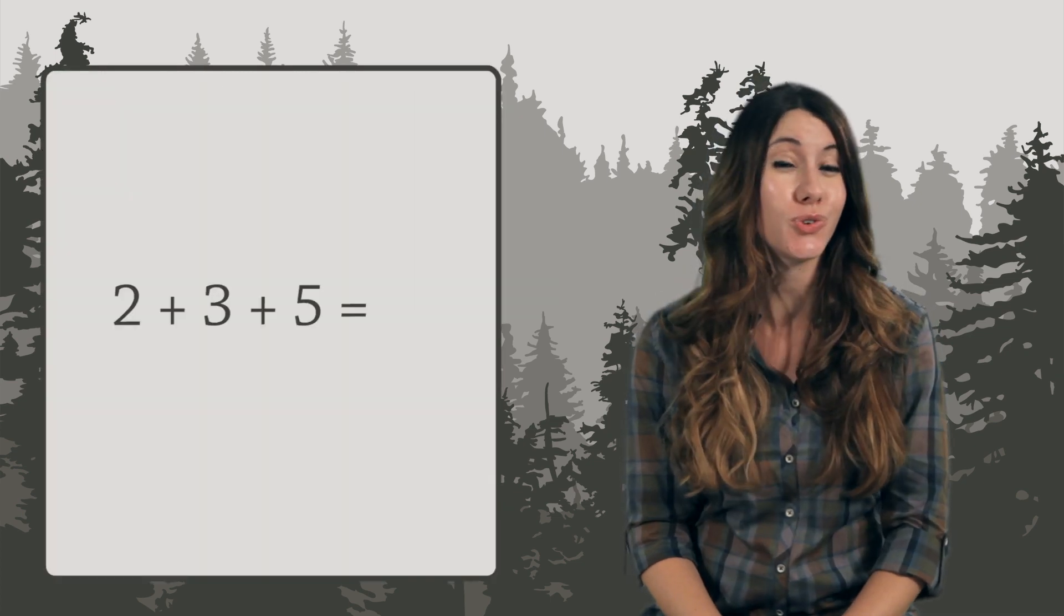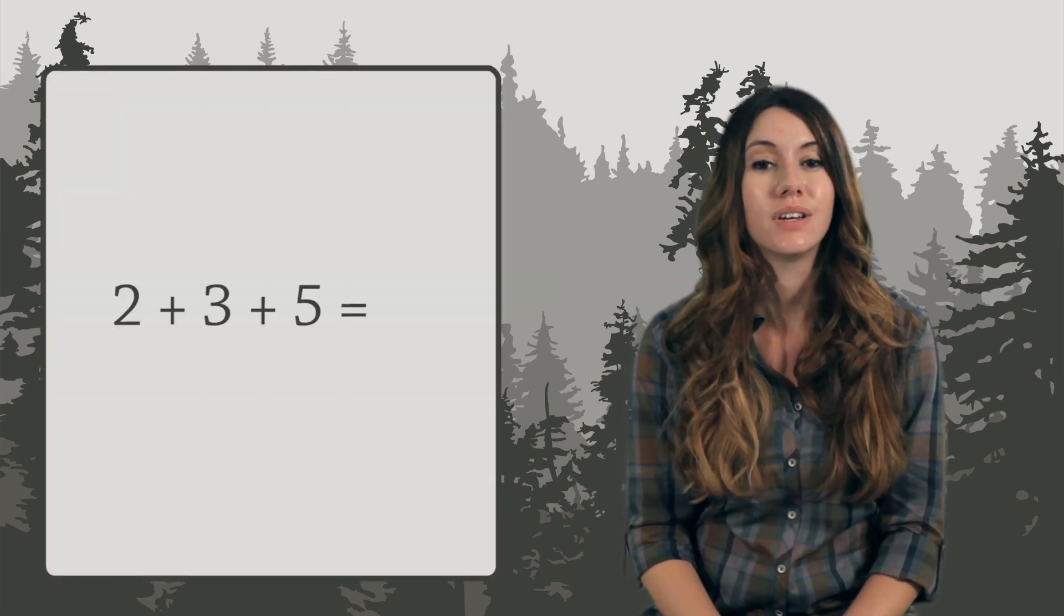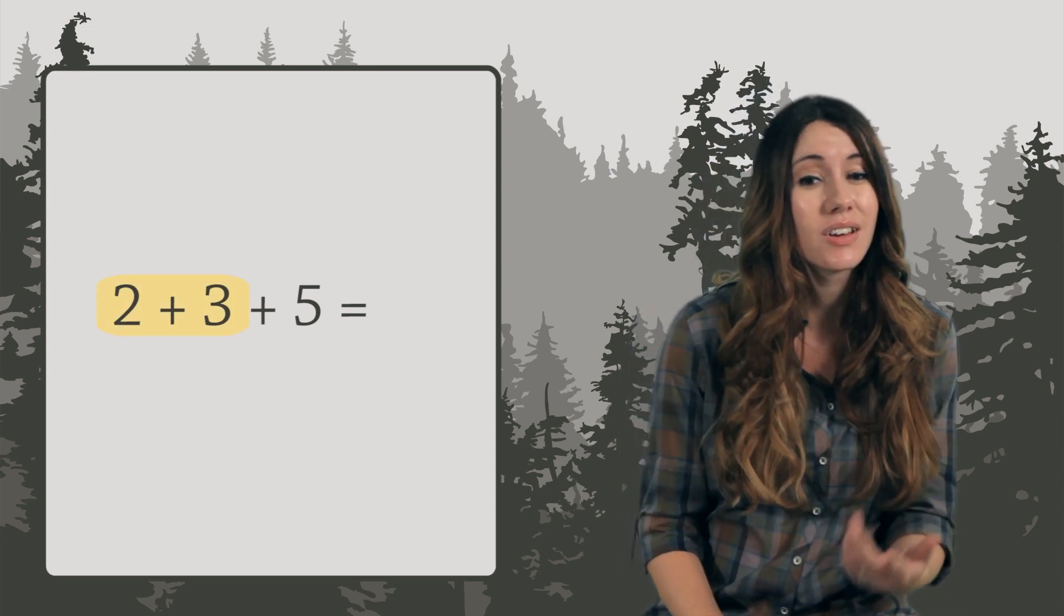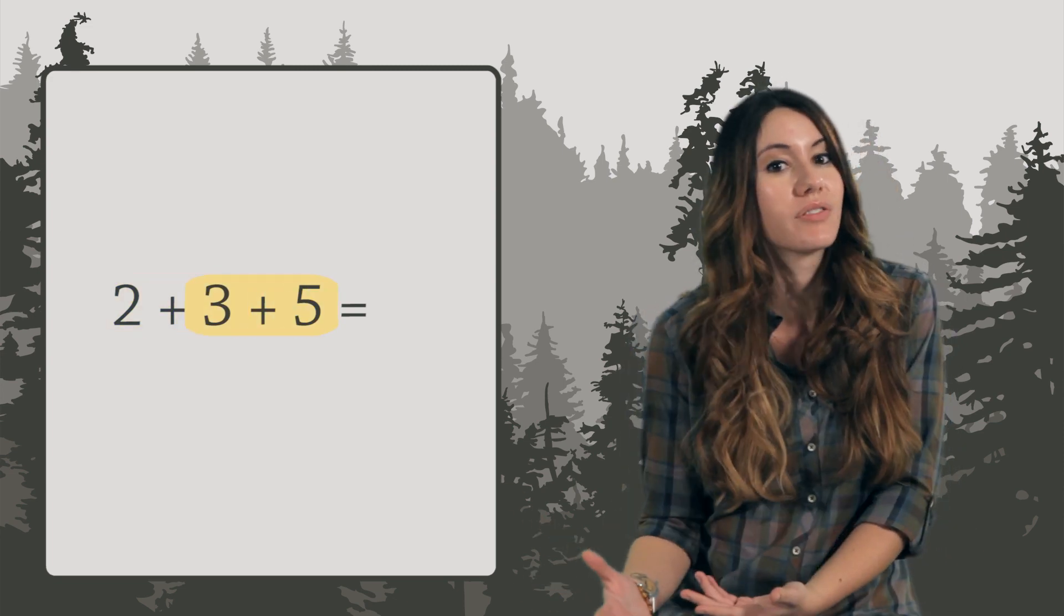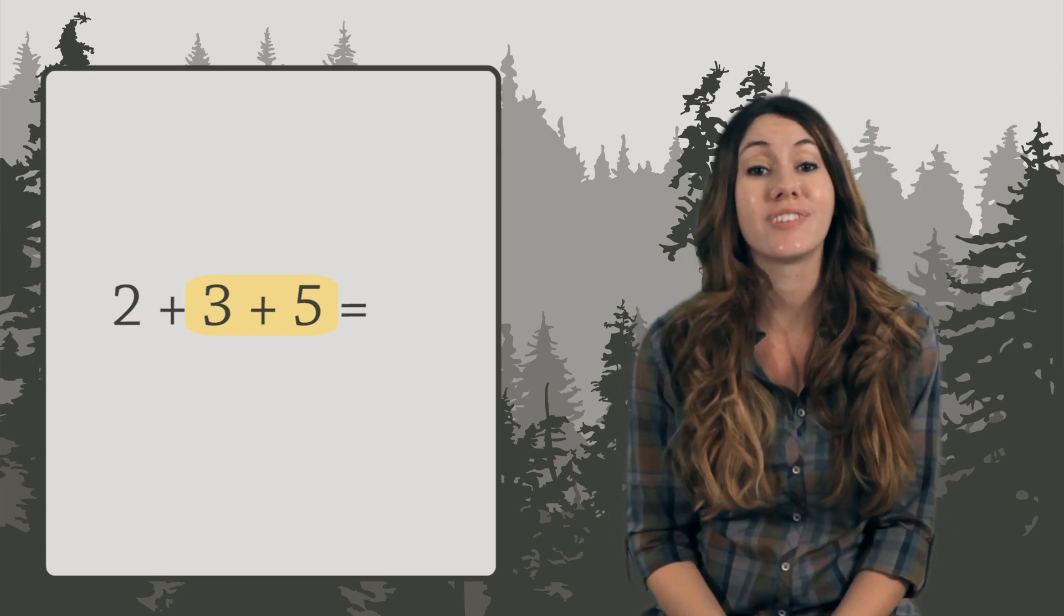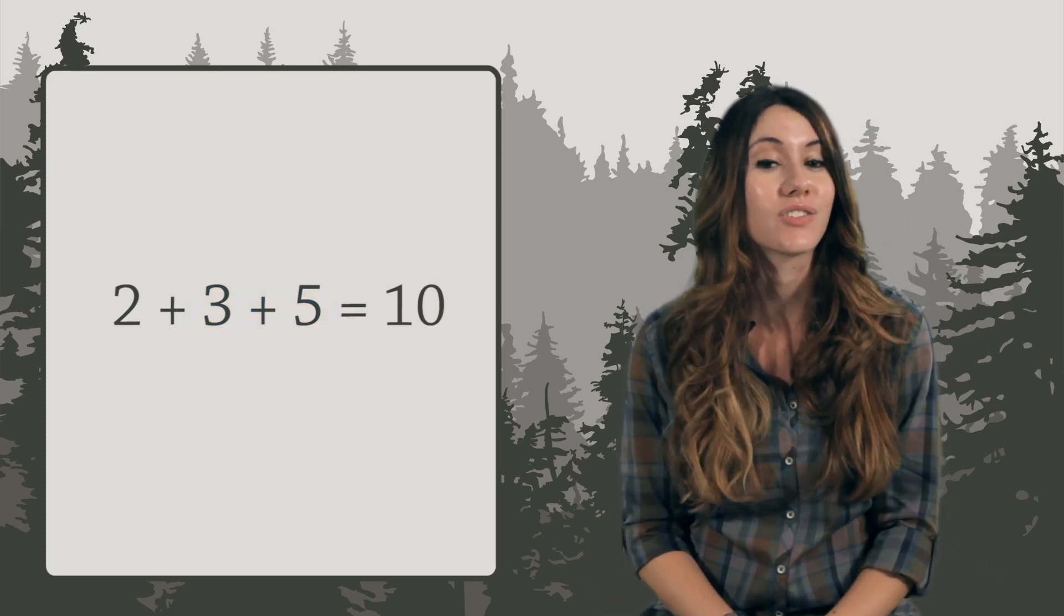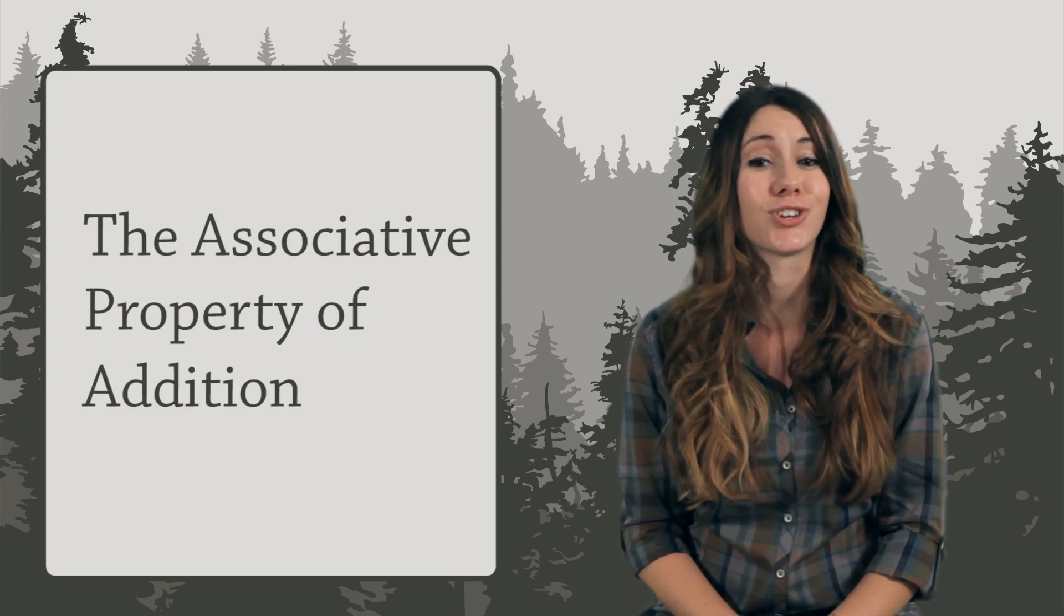Suppose you want to compute 2 plus 3 plus 5. Which do you add first? Do you start with 2 plus 3, or do you start with 3 plus 5? It turns out the order doesn't matter. You will always get 10. This fact is called the associative property of addition.